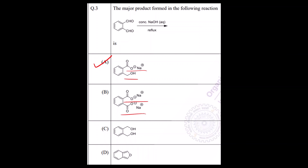Comparing with the options: option B has both groups oxidized, which is not correct; option C has both groups reduced to alcohol, also not correct; option D shows intramolecular cyclization, which will not happen. The correct answer is option A. The most important part in any organic reaction is identifying the reaction — once you know the reaction and its mechanism, everything becomes easier.